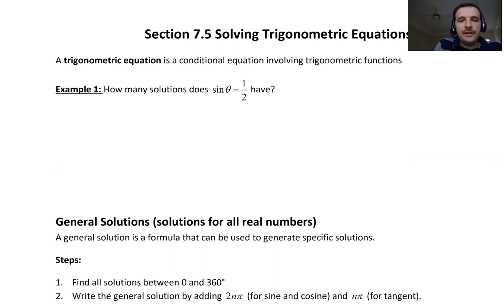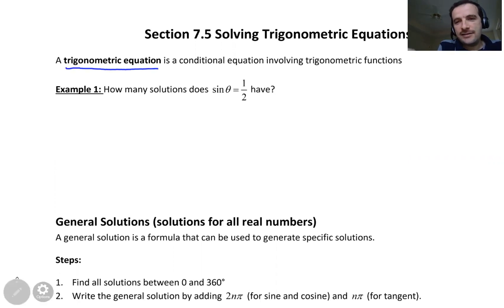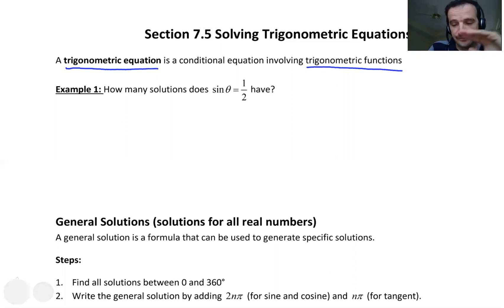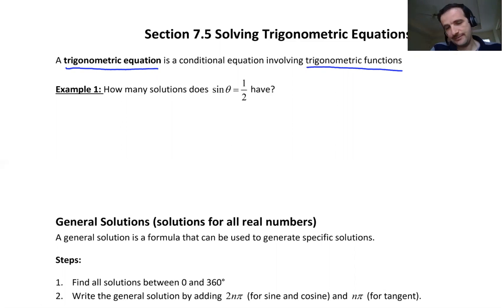So first of all, what's a trigonometric equation? A trigonometric equation is an equation that has trigonometric functions in it. Normally when I say equation, you can consider, for example, 2x plus 5 is equal to 7, and you try to solve this equation for x. In the trigonometric equation case, we don't have x only — we also have trigonometric functions. For example, sine of x plus 5 is equal to 7.